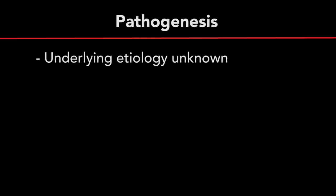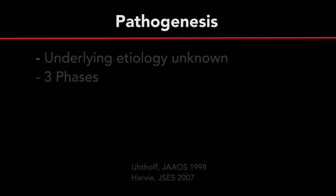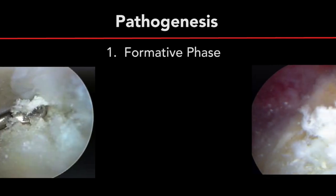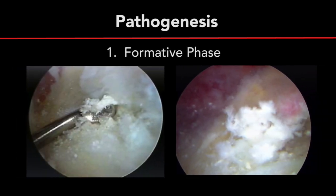While the underlying etiology is unknown, the pathophysiology is thought to occur in three distinct phases. First, in the formative phase, cell-mediated calcification occurs, where calcium crystals are deposited into matrix vesicles. During this phase, patients are generally asymptomatic.